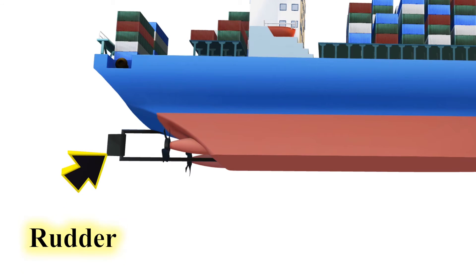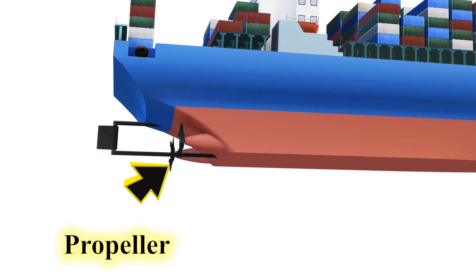Rudder, a movable device at the stern that controls the ship's direction. Propeller, a rotating device that propels the ship through the water.